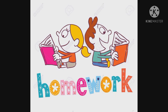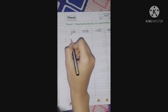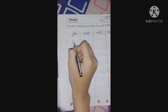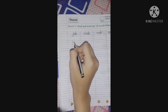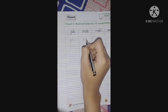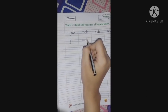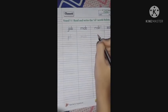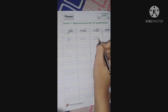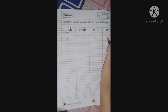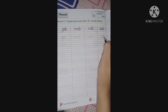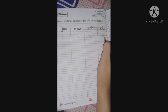And now it's your homework time. Open your English workbook. So, our first word is J-O-B — job. M-O-B — mob. R-O-B — rob. S-O-B — sob.